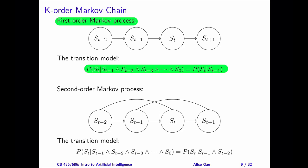In some cases, we may not be happy that each state only depends on the previous state. Perhaps the two previous states both have useful information to determine the current state. We can define a second-order Markov process. Each state depends on the two previous states. For example, S sub t depends on S sub t minus 1 and S sub t minus 2.